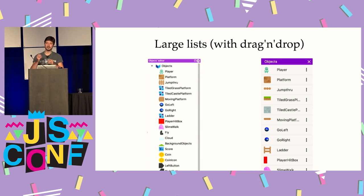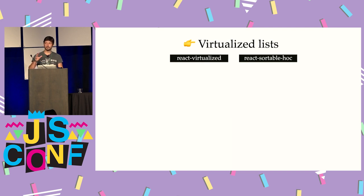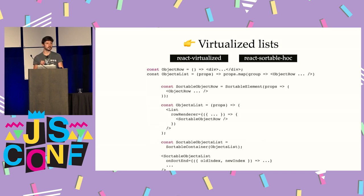Once I had that, the first thing I had to sort out was how to display large lists of objects. In GDevelop I have the list of objects living on the scene, which can be a few hundred objects. The solution was to use virtualization — using react-virtualized and react-sortable-hoc, you can display a virtualized list, meaning instead of having 300 DOM elements for every object, you only have the objects displayed on screen in the DOM — maybe 10 or 20. The way it works: instead of mapping over an array, you use the List component from react-virtualized and use a property called rowRenderer to define the function that generates each displayed row.